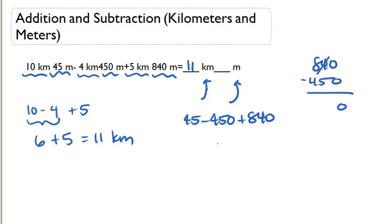We get 0, 14, 7. 14 minus 5 is 9, 7 minus 4 is 3. So this is 390. Now we're going to do 390 plus 45.